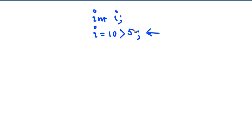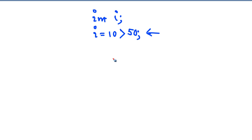Now, instead of 5, if we had written 50 here, the case is different. The greater than operator finds that the left-hand side is not greater than the right-hand side, so it's going to return 0. So i is going to contain 0 after this operation.